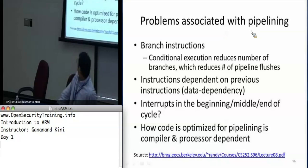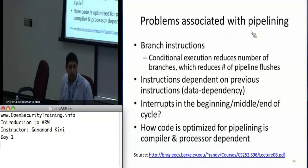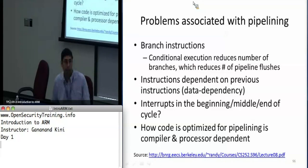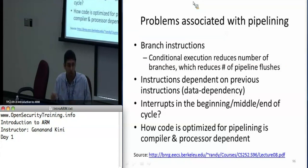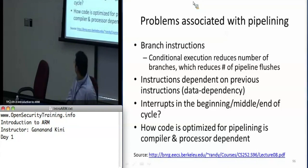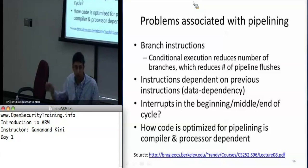There are problems associated with pipelining. What happens when there's a branch, especially a conditional branch? A conditional branch actually helps because it reduces the number of branches that are possible and helps the branch predictor, which is part of the ARM hardware implementation. Every time you do an unconditional branch to a fresh location, it has to flush the pipeline. Reducing branches reduces the number of flushes and therefore increases throughput.